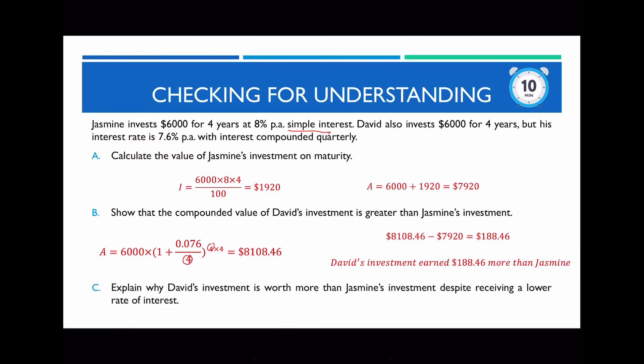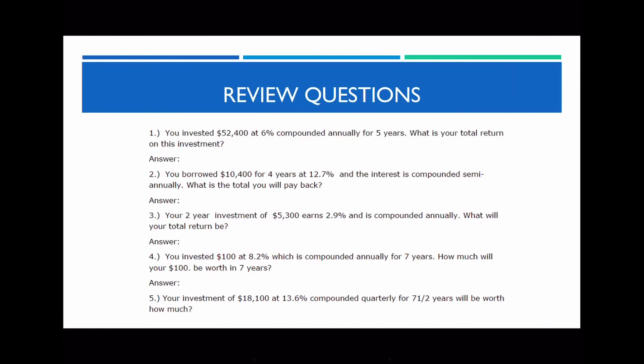For part (c), explain why David's investment is worth more despite his lower interest rate of 7.6% compared to Jasmine's 8%. The answer: David's interest is compounded quarterly, meaning the interest is added to the principal each quarter and earns interest itself. In the long term, compound interest will always surpass simple interest, even at a lower rate.